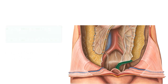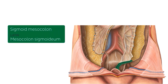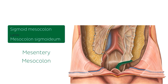Moving superiorly, we can see another fold of peritoneum here, which is known as the sigmoid mesocolon. The sigmoid mesocolon is a mesentery, which is a double fold of peritoneum that attaches parts of the intestines to the posterior abdominal wall. A mesentery that specifically attaches to parts of the colon is called a mesocolon. The sigmoid mesocolon functions to attach the sigmoid colon to the posterior abdominal wall.